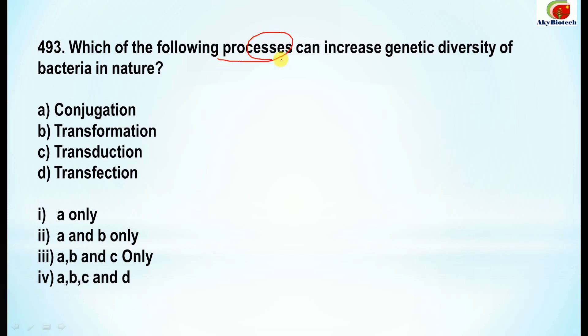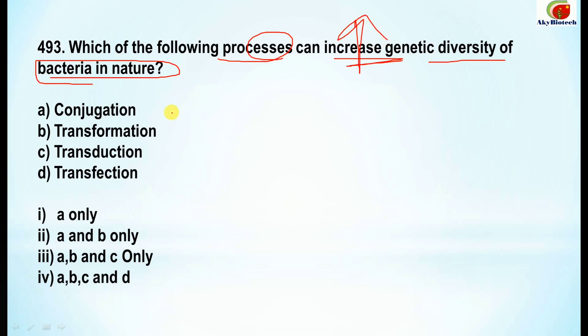Question 493: which of the following processes can increase the genetic diversity of bacteria in nature? The correct option is A and B only — that is conjugation as well as transformation.